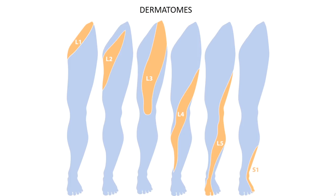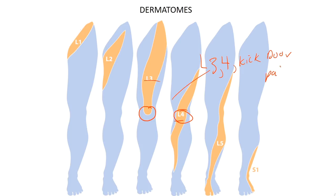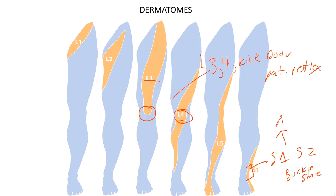Dermatomes: L1 through S1 cover the lower limb. Key reflexes: hitting the patellar tendon tests L3-L4 — 'L3-4, kick the door.' Hitting the ankle (Achilles reflex) tests S1-S2 — 'S1-S2, buckle my shoe.' These are super high yield.